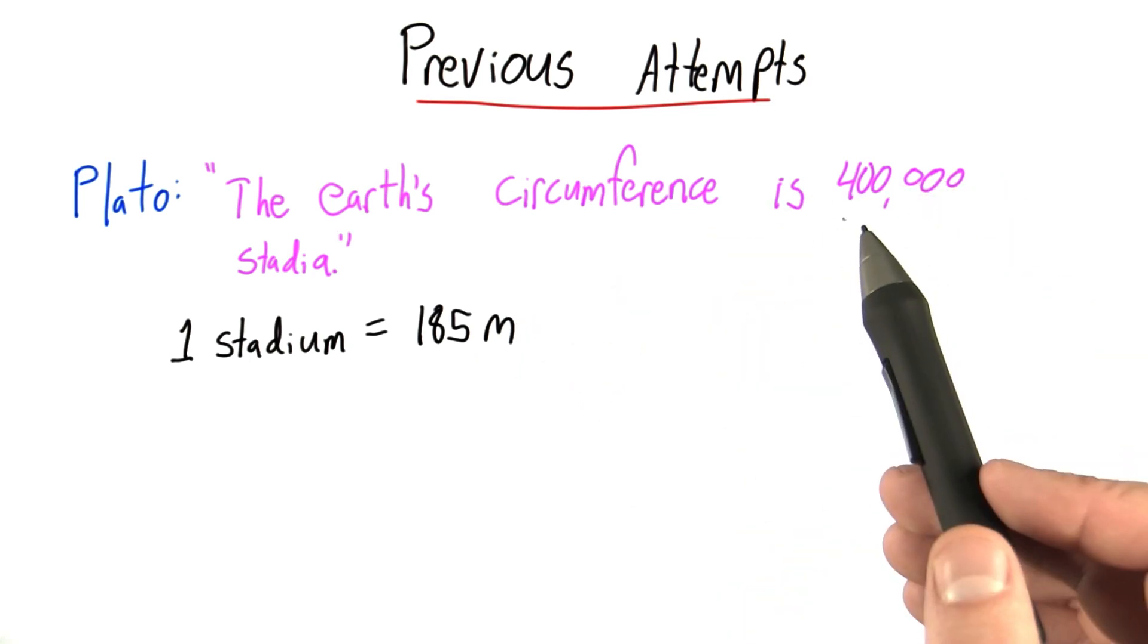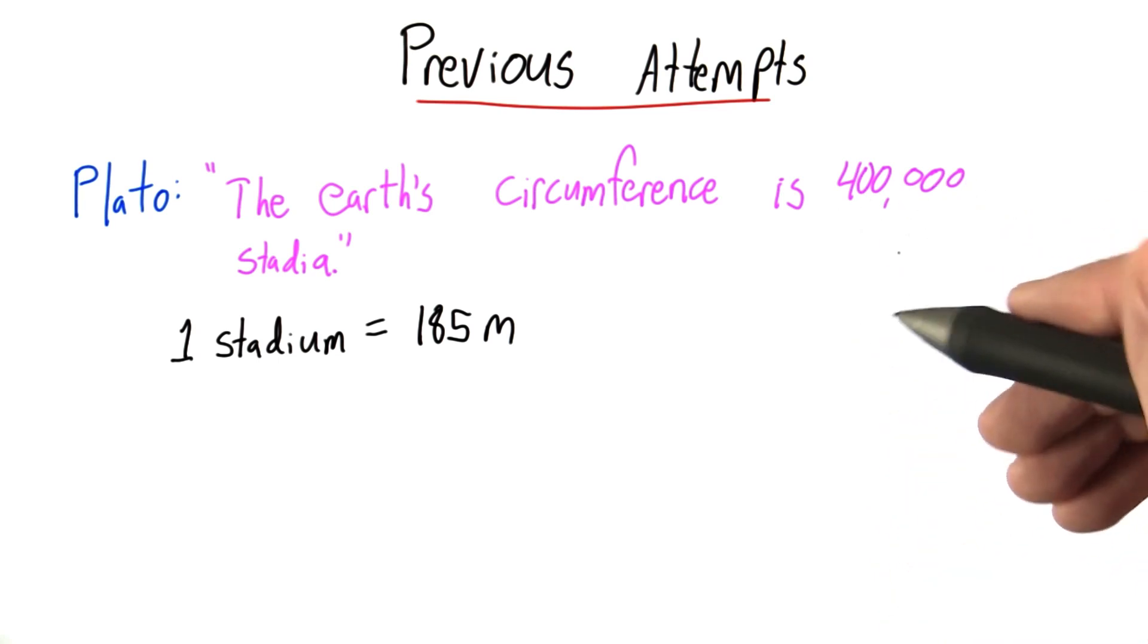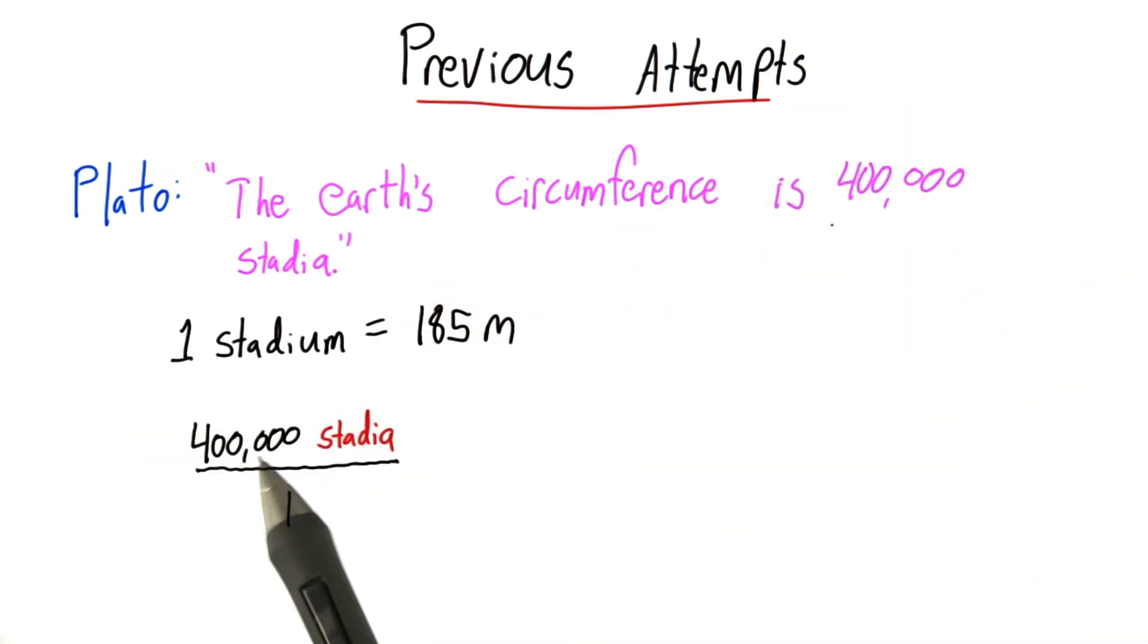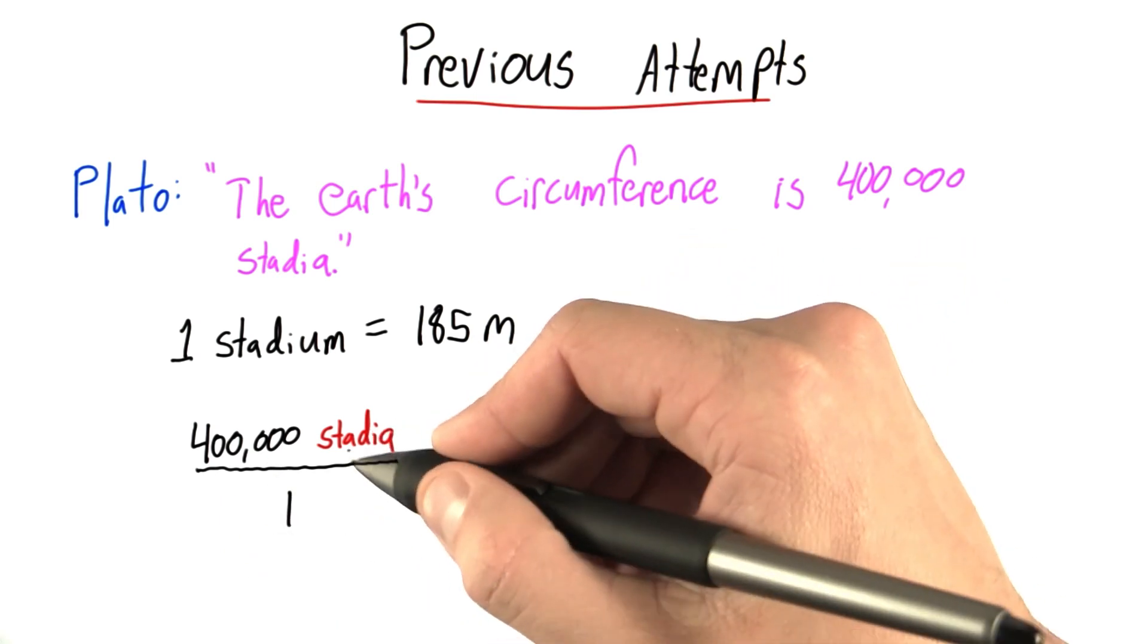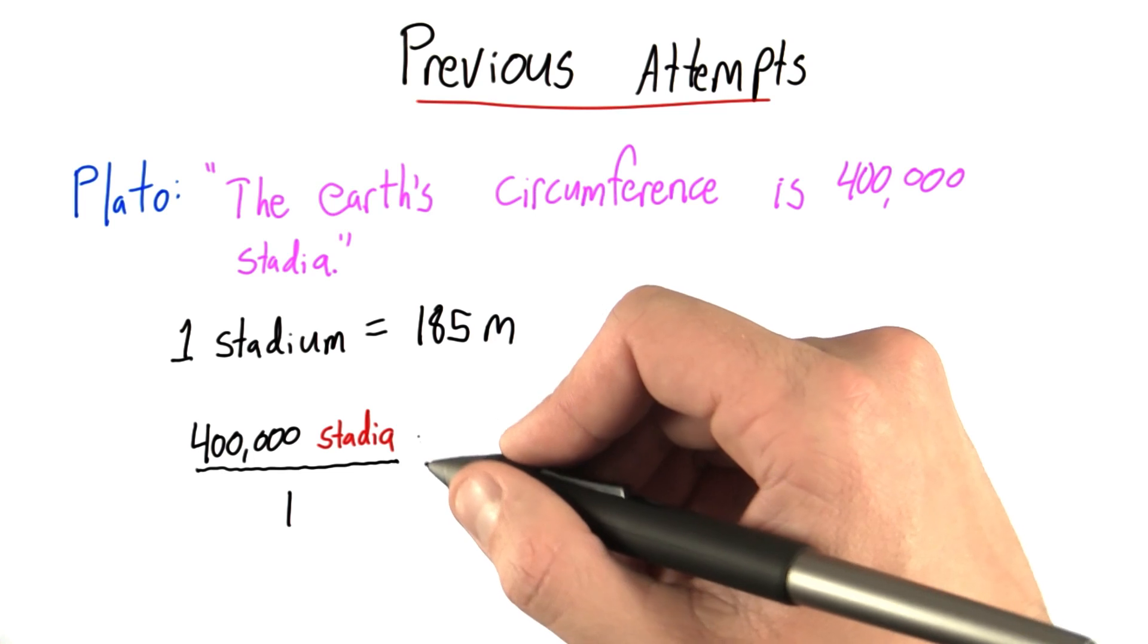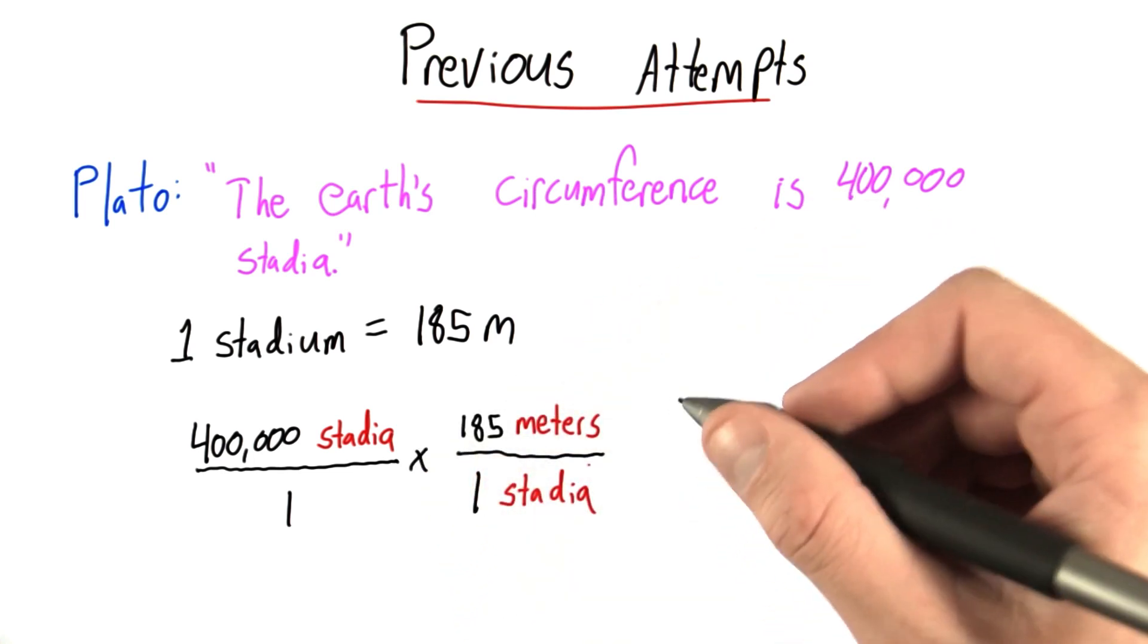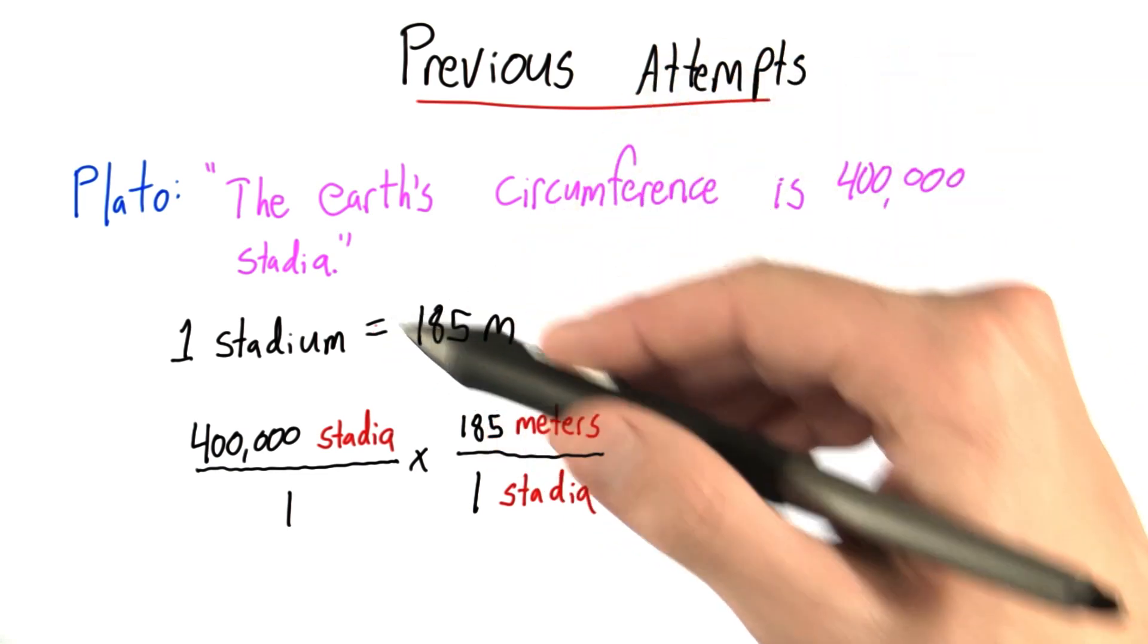So let's convert this number, 400,000 stadia, into a better unit, maybe kilometers. Now, one way to do that is to start by writing out what we were given. We know we have a number, 400,000 stadia, and I'm being careful to write the units because the units are pretty relevant here. I'm going to write this as over 1 because I can always do that without changing the number. I'm then going to multiply this by a conversion factor. The conversion factor that I chose is the one I know, that 185 meters is equal to 1 stadia.